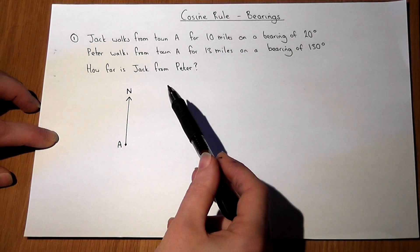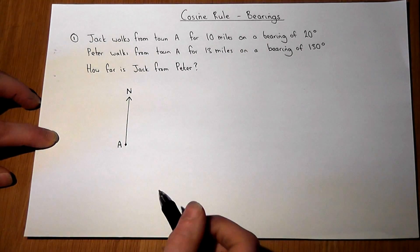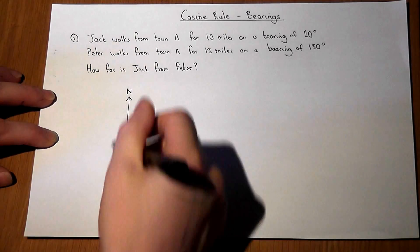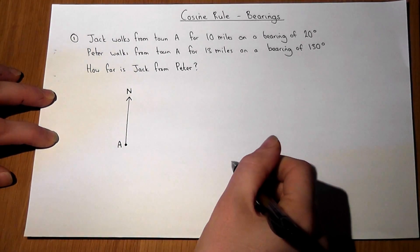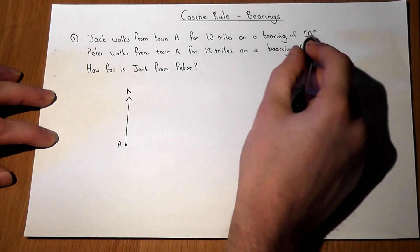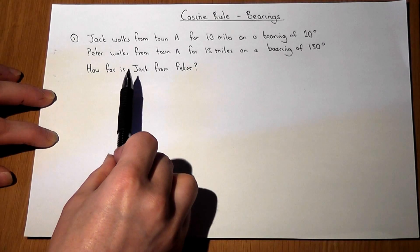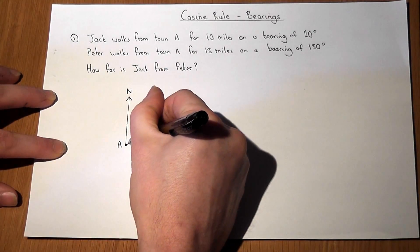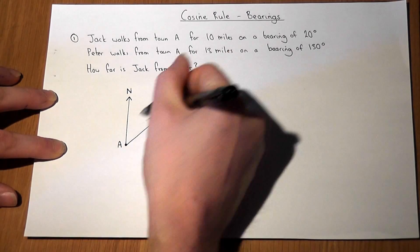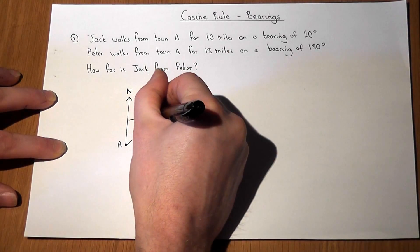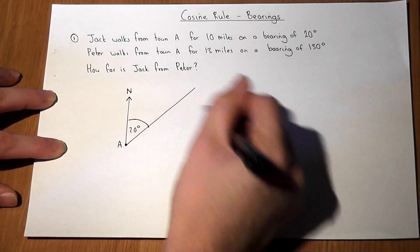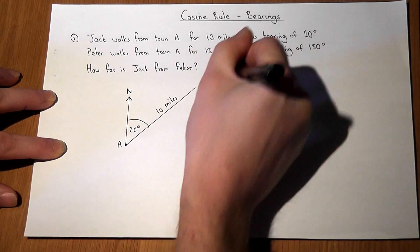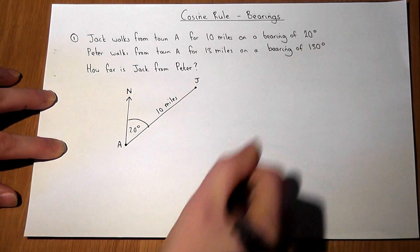We'll do a sketch to see what's going on. Jack walks from town A, and a bearing is an angle clockwise from north. So in the sketch, he walks at an angle of 20 degrees and travels for 10 miles — that's where Jack ends up.